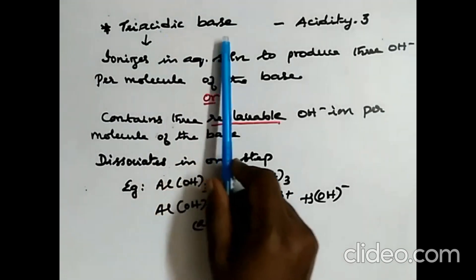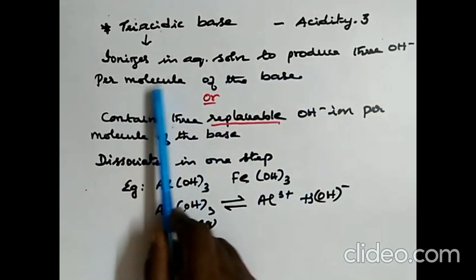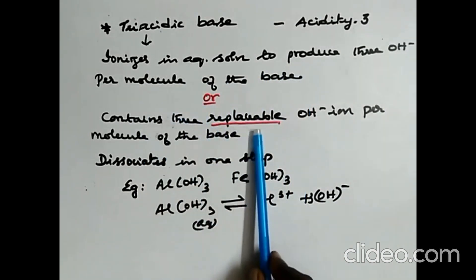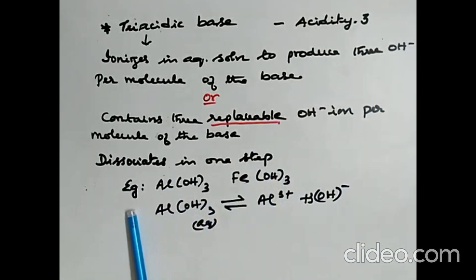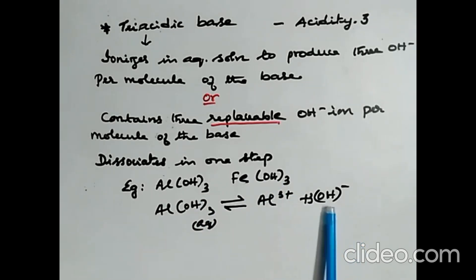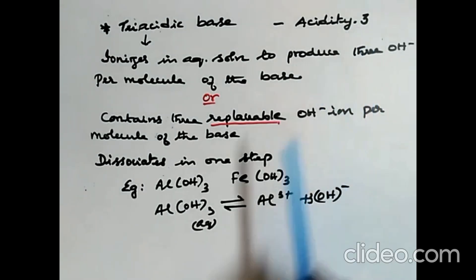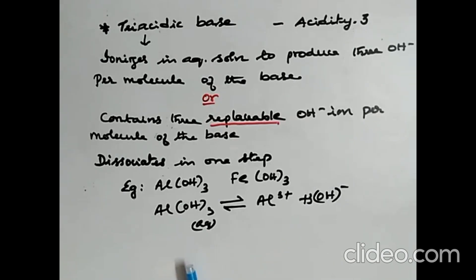Triacidic base: acidity is 3 — it ionizes to produce 3 hydroxyl ions per molecule, or contains 3 replaceable hydroxyl ions per molecule. It also dissociates in 1 step. Example: aluminium hydroxide dissociates to give Al3+ and 3 OH− ions. Unlike acids — where dibasic and tribasic acids dissociate in 2 and 3 steps respectively — monoacidic, diacidic, and triacidic bases all dissociate in 1 step.